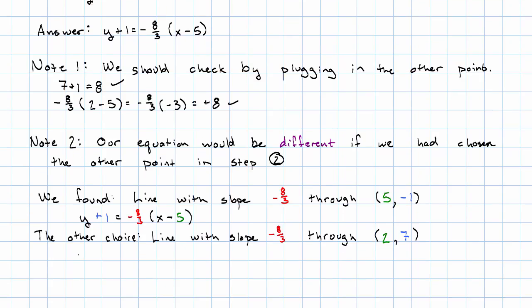Which would have been y minus 7 equals negative 8 thirds (x minus 2). Notice those equations look different from each other. But we're claiming they describe the same line.